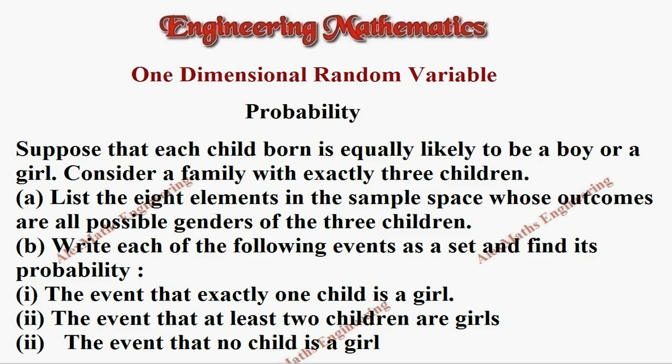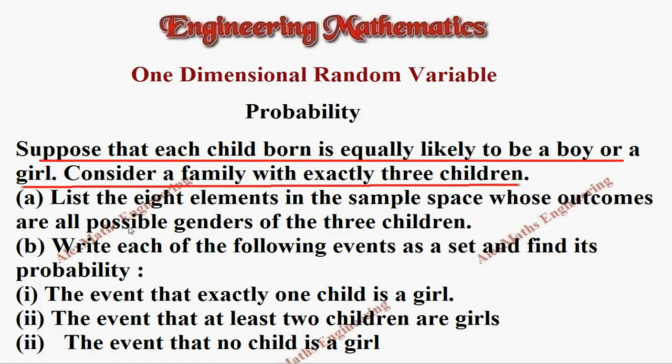Hi students, this is Alex. In this problem, suppose that each child born is equally likely to be a boy or a girl. Consider a family with exactly three children. First subdivision: list the eight elements of the sample space whose outcomes are all possible genders of the three children.